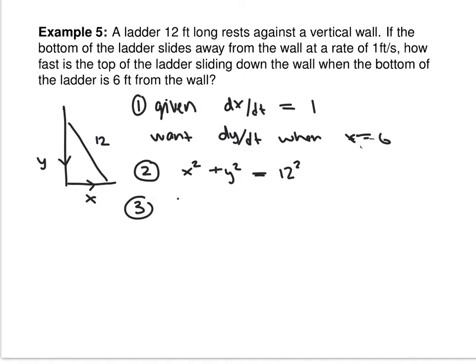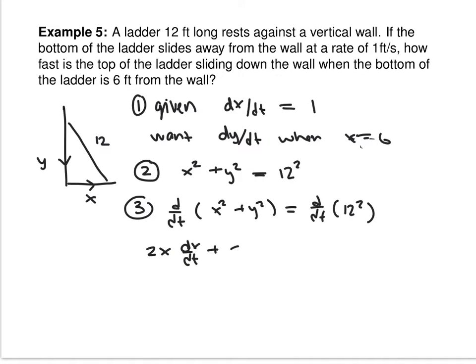Take the derivative: 2x dx/dt plus 2y dy/dt equals 0. How about 12 squared's derivative? Zero. What's the derivative of sine of 2? Zero. Derivatives of constants are always zero — I keep trying to trick you with tricky constants.